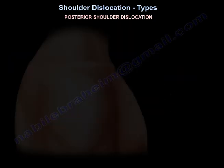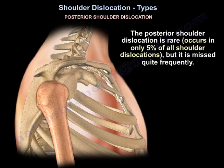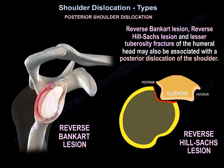Posterior dislocation is rare — only 5% of all shoulder dislocations — but it is missed quite frequently. Reverse Bankart lesion, reverse Hill-Sachs lesion, and lesser tuberosity fracture of the humeral head may be associated with a posterior dislocation.